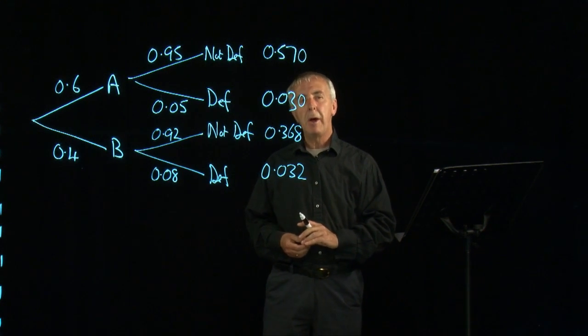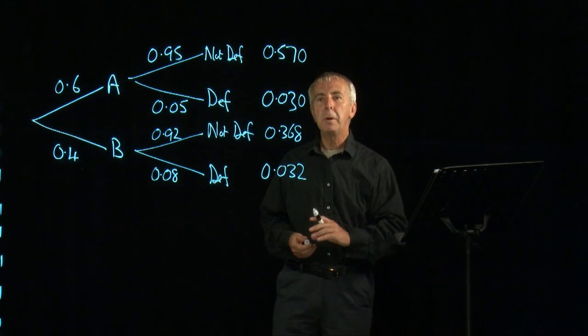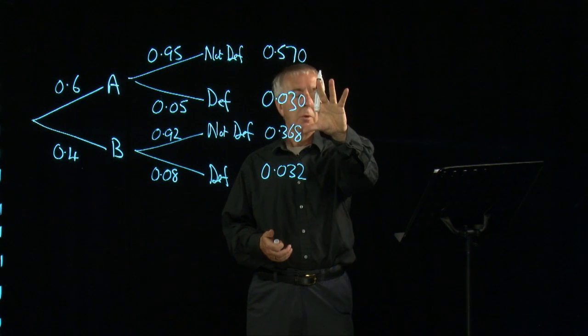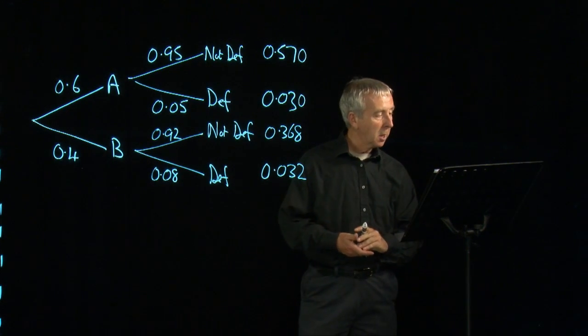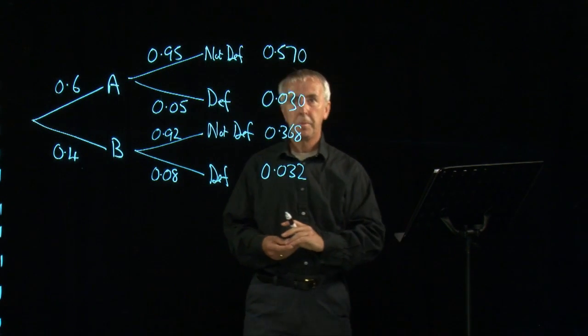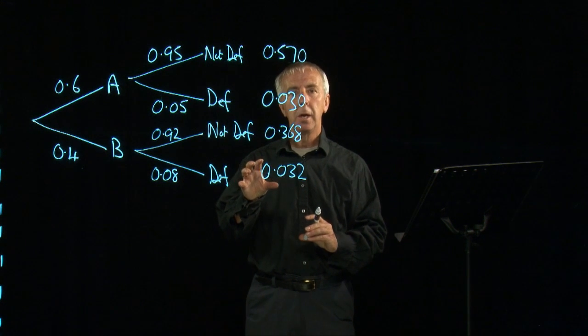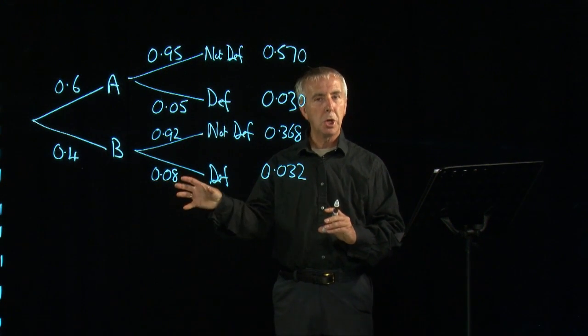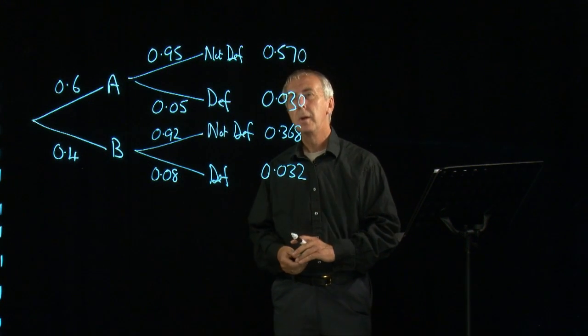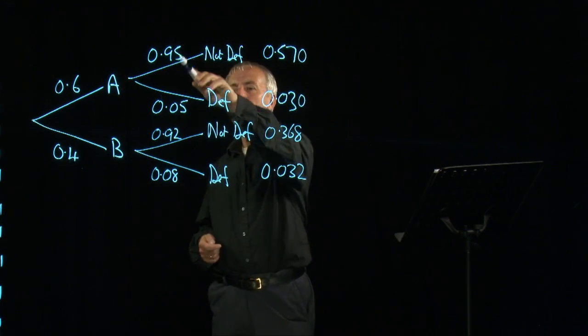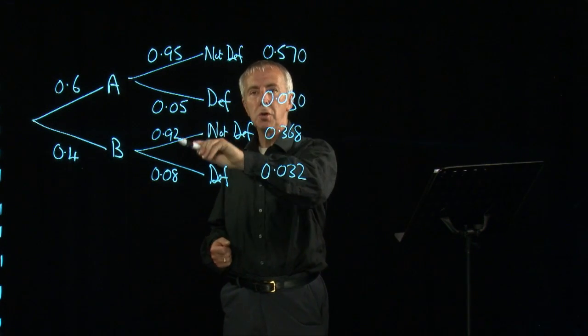Now let's turn it round. Suppose we pick an item at random from the end and we find that it's a defective item. What's the probability that it was produced by machine A? What we have here, these probabilities are called conditional probabilities.